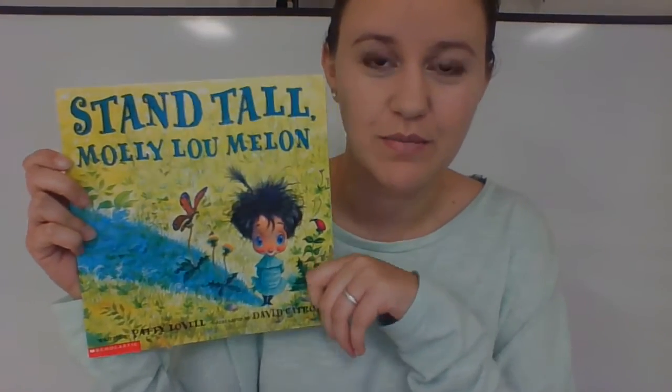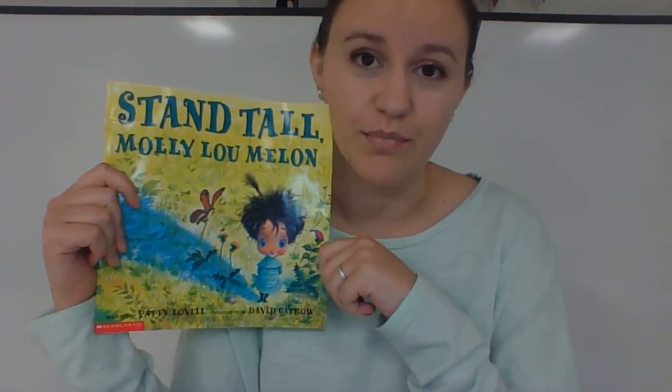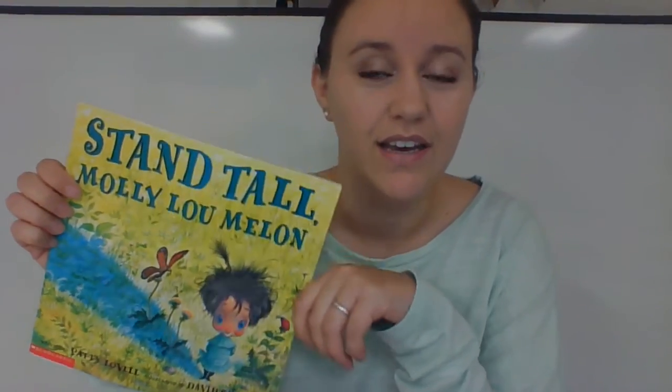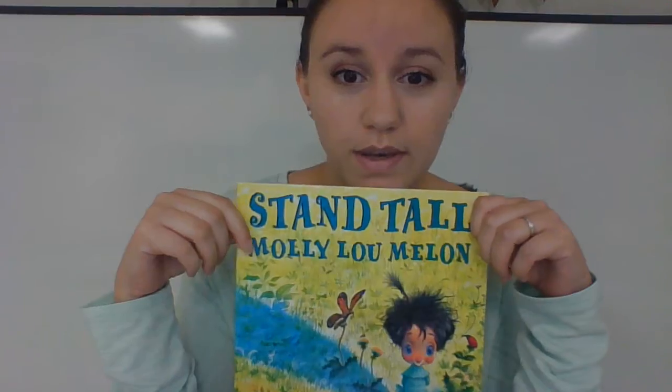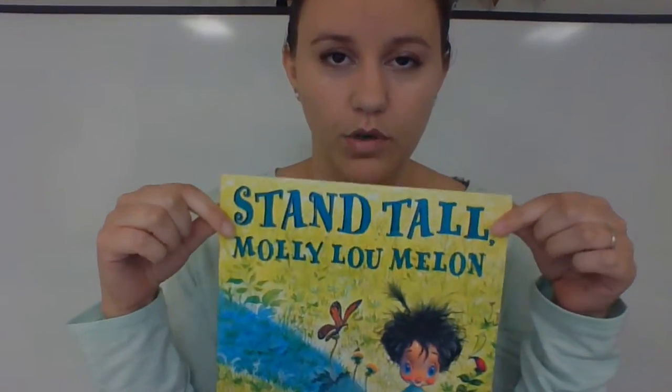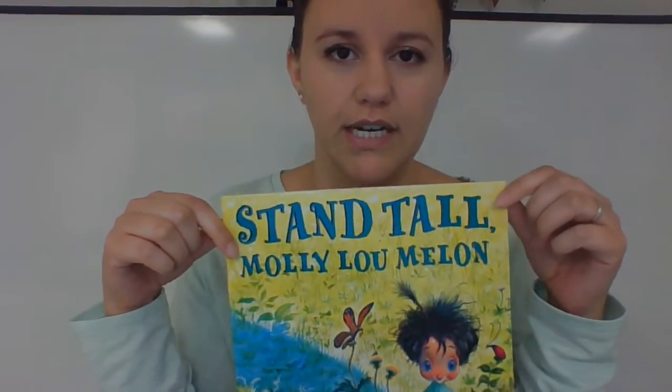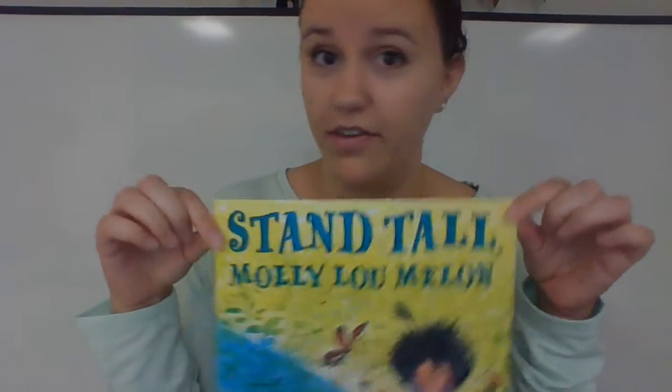Hey friends! We're going to do two quick parts of a reading lesson today. The first part is we're still going to be using our same story, Stand Tall, Molly Lou Melon, because good readers read stories over and over again. They look at different parts and try to understand the text more every time they read it. So we're going to ask ourselves: how can we better understand this story? What are some things we can do to better understand all the things about this story?